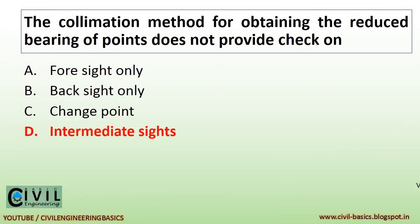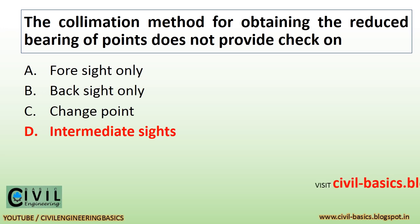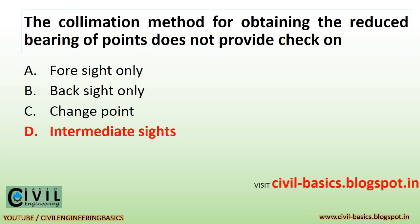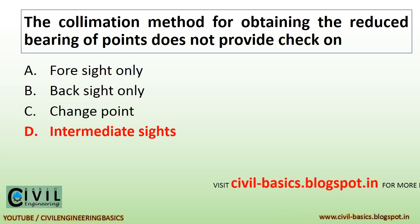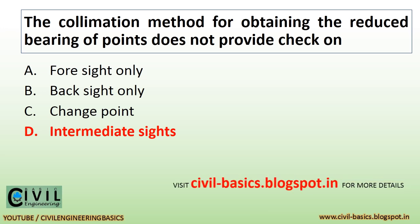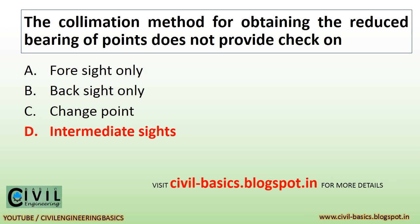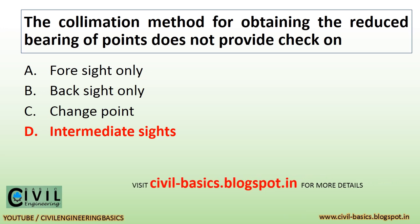The collimation method for obtaining the reduced levels of points does not provide a check on intermediate sights.